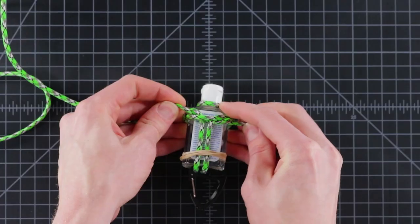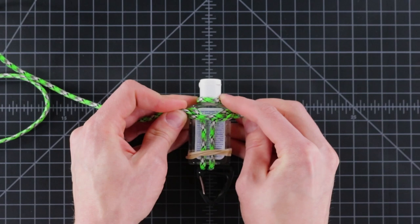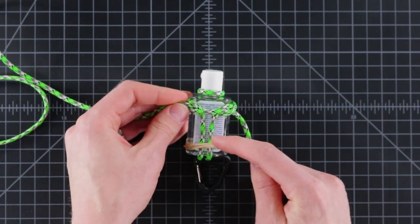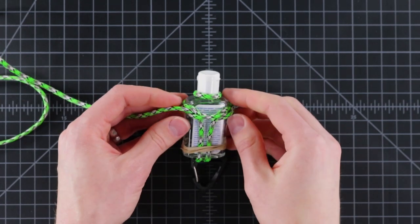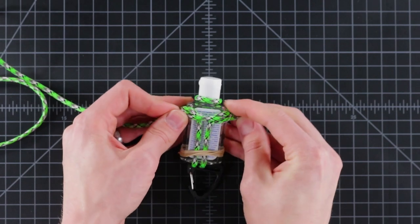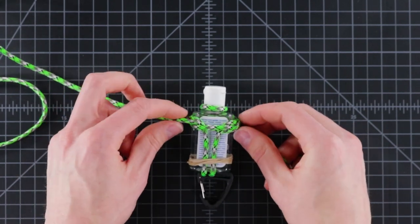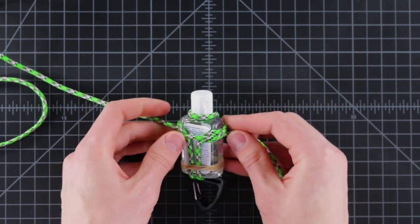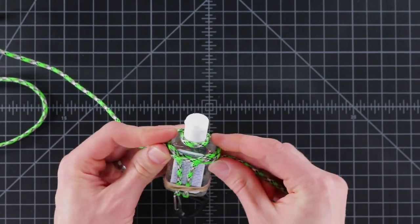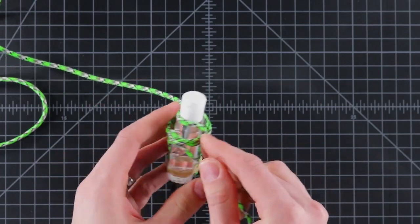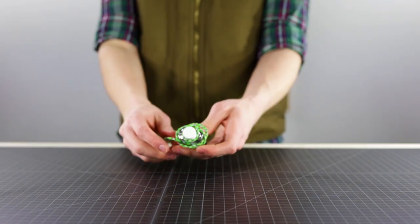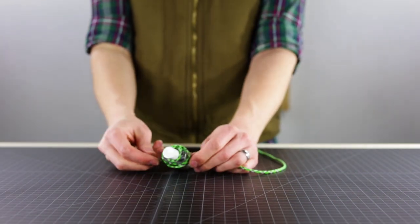This is very similar to a West Country whipping, if you've done those on a knife handle wrap before. But we're adding these center strands. So we're just going to keep on doing that all the way down the bottle. Now that it's somewhat in place, it's going to stay up at the top. If you pull it too tight, it's going to slide down, but just kind of hold it there as you're tightening as you go.